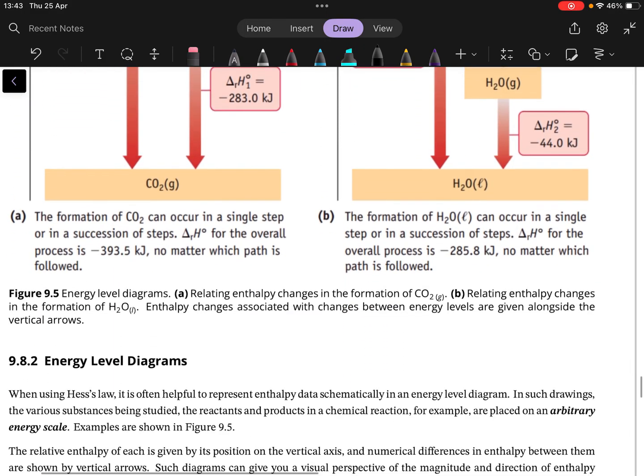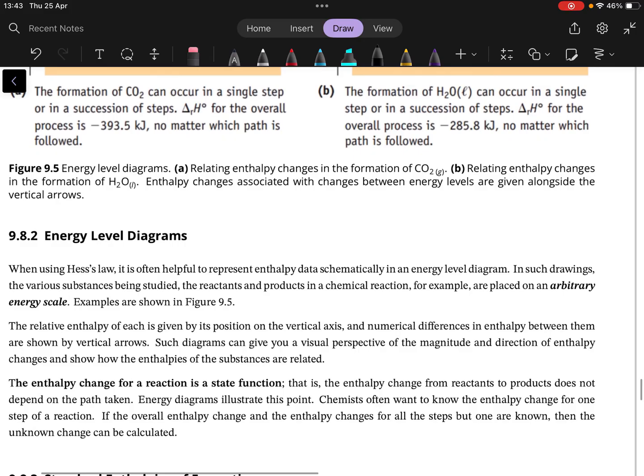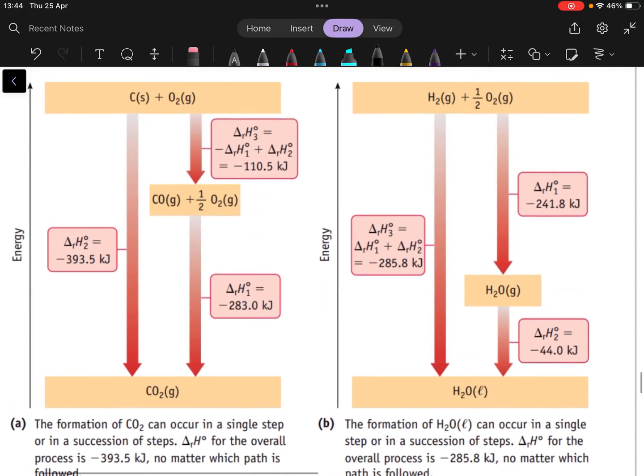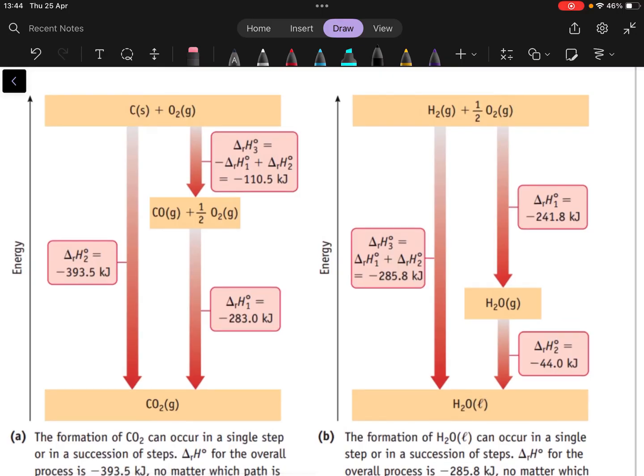The way that we can express these in a nice summative way, so it's essentially the graphical way of expressing Hess's law—so this is like Hess's law graphically—is to use these energy level diagrams.